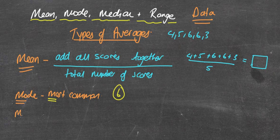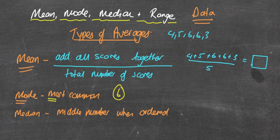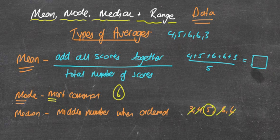The median, which is often the most challenging one to find, is the middle number when ordered. What you need to do is put these numbers in order: 3, then 4, then 5, then 6, then 6. To find the middle number, cross one off from either end until you get one middle number. In this case, the median would be 5.